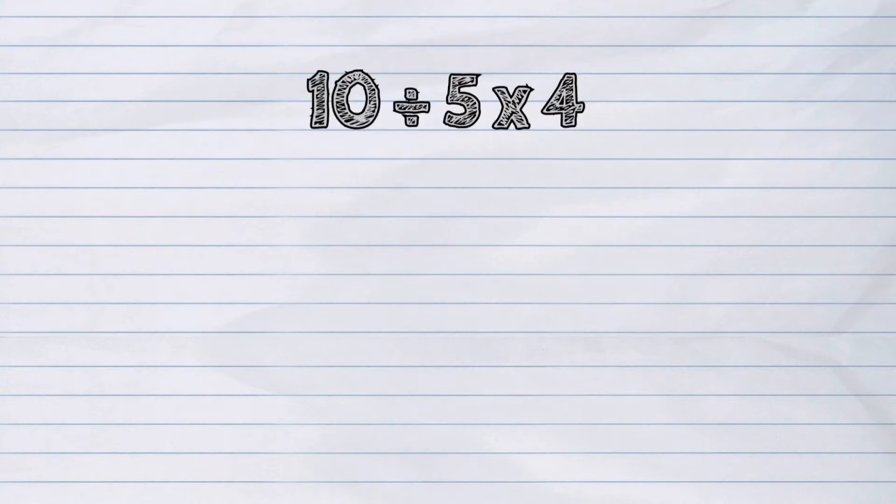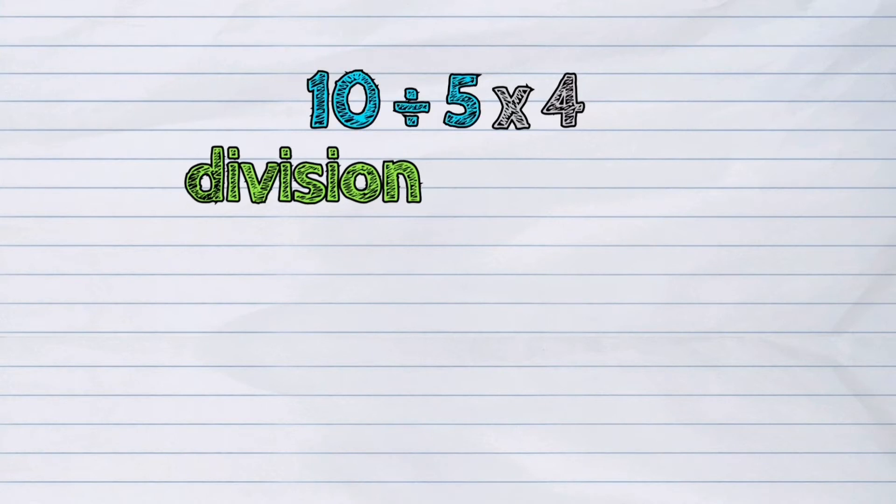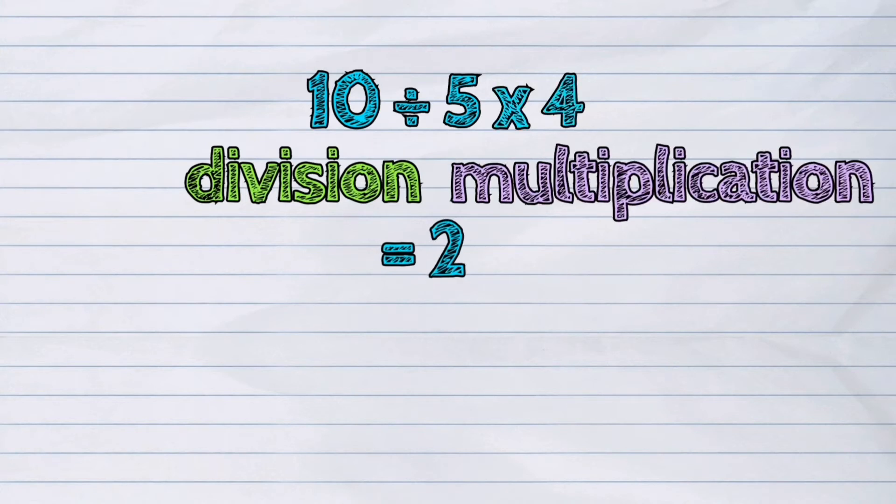Next, 10 divided by 5 times 4. The first operation is division since it comes first, then multiplication. So it would be 10 divided by 5 is 2. Then multiply. 2 times 4 is 8.